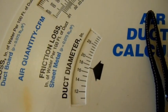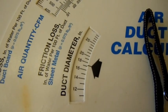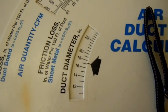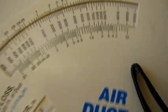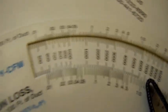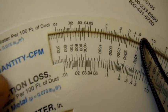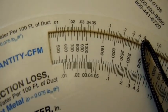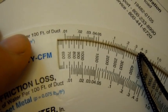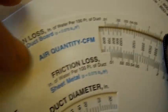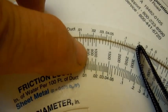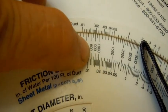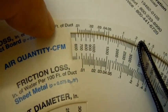Now, let's say for example, you have a two ton air conditioning system. You would adjust your air quantity, CFM, to 800 because 400 times 2 is 800.